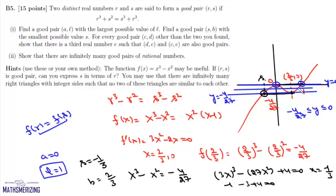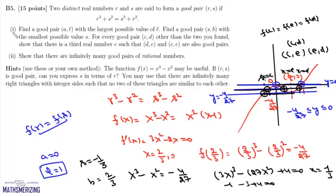For lines at y between −4/27 and 0, the horizontal line intersects the curve at three points c, d, e, so pairs (c,d), (d,e), and (c,e) all form good pairs. This gives infinitely many good pairs. Since the rational numbers are dense in this interval, there are infinitely many good pairs of rational numbers — this part is essentially trivial.